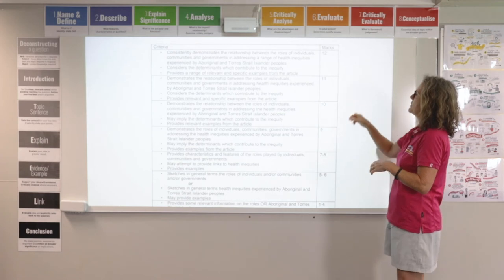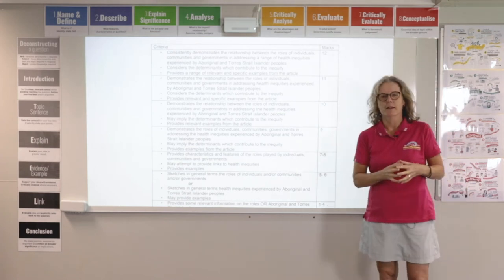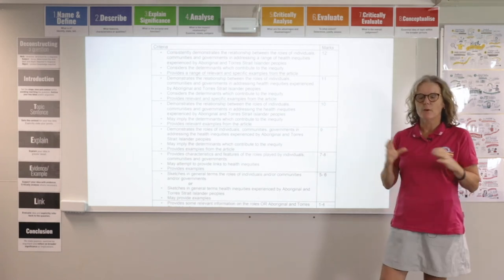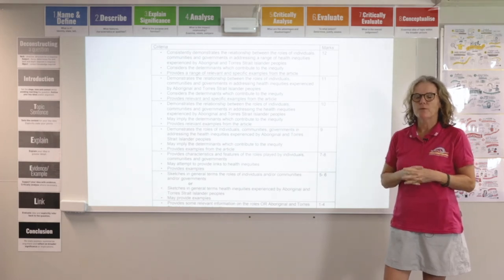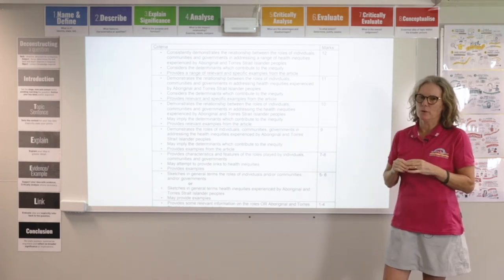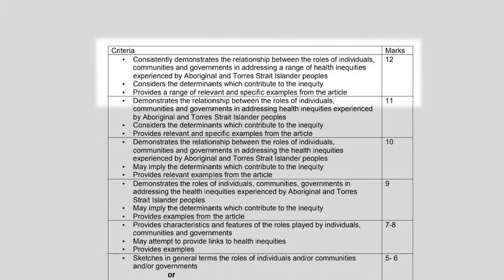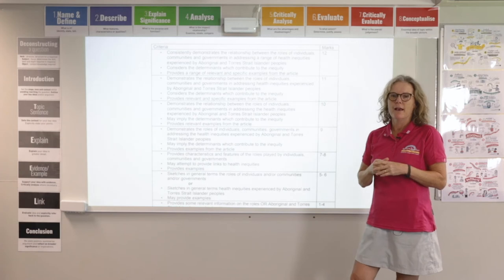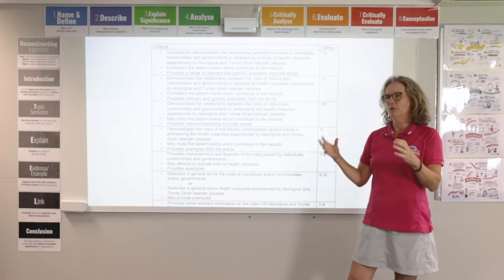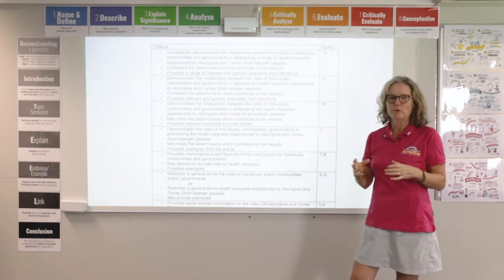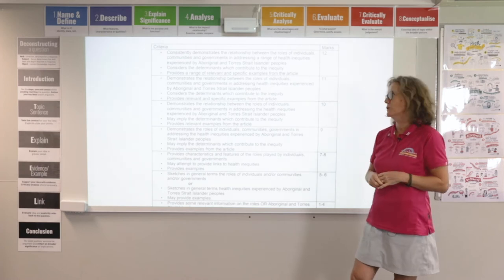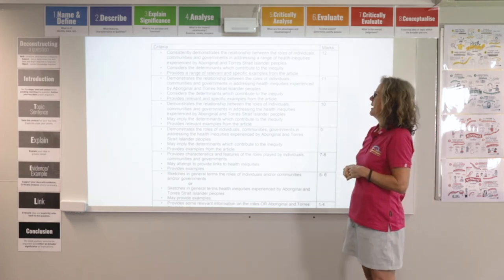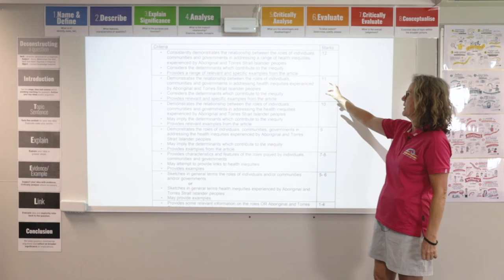Let's have a quick look at the marking criteria. We've divided it down into 12, 11, 10 and 9. We want you all to get in those top bands, but we've created a difference between each one. The big difference between the top two bands comes down to one word in particular: consistently. You must consistently demonstrate that relationship in individuals, communities and governments — you can't just do really well with one or two. You need to do it consistently throughout and make sure you make that cause and effect really obvious.